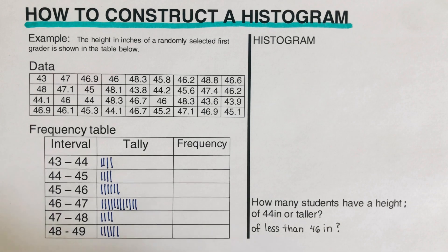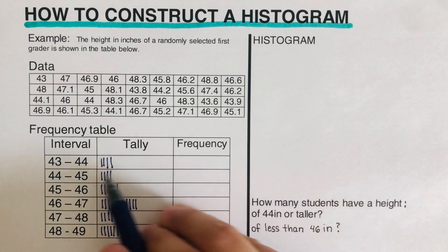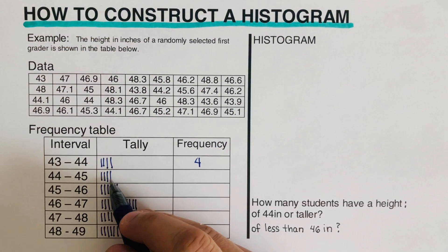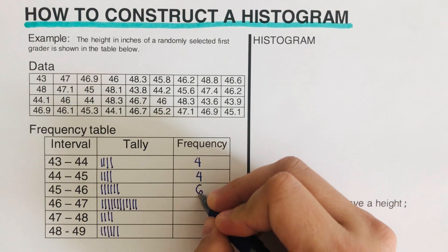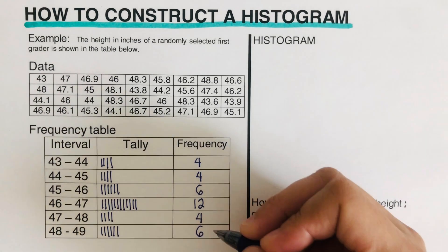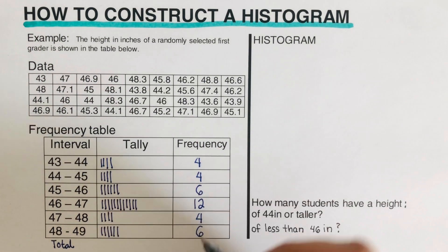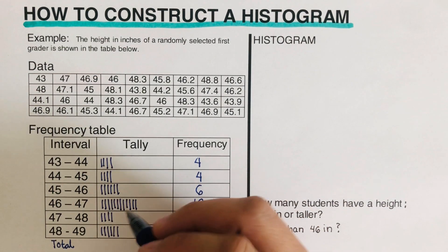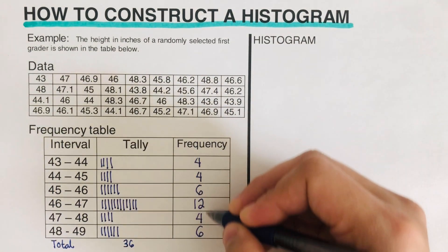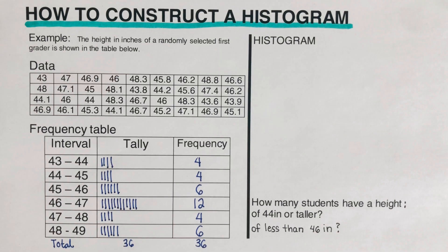After tallying, we count the values belonging to each interval and record that as the frequency. For the first interval that is 4, the next interval is also 4, and the next is 6. The total of all frequencies is 36, which also matches the total count of the data. We are now ready to sketch the histogram.